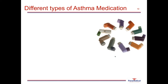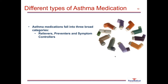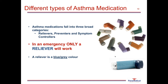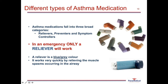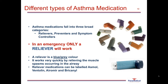There is a large variety of asthma medications that help the asthmatic patient keep asthma under control or relieve signs and symptoms during an attack. Asthma medication falls into three broad categories: relievers, which relieve the signs and symptoms of the attack; preventers, which help prevent an attack; and symptom controllers, which also aid in prevention. In an emergency, only a reliever will work. The reliever is a blue-grey colour and works quickly by relieving muscle spasms in the airway. Common reliever medications include Ventolin, Airomir, and Braconil.